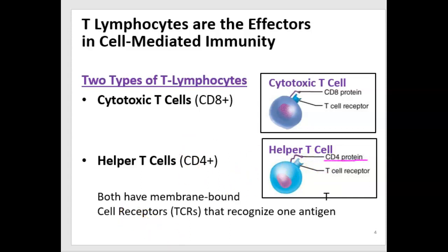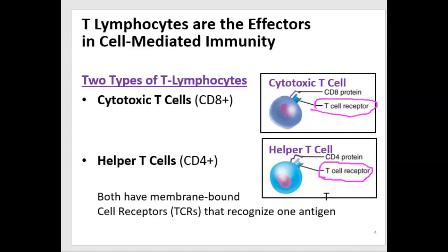Both types of T lymphocytes have receptors that will recognize an antigen — they both have T cell receptors. And they will recognize an antigen much like an antibody would.